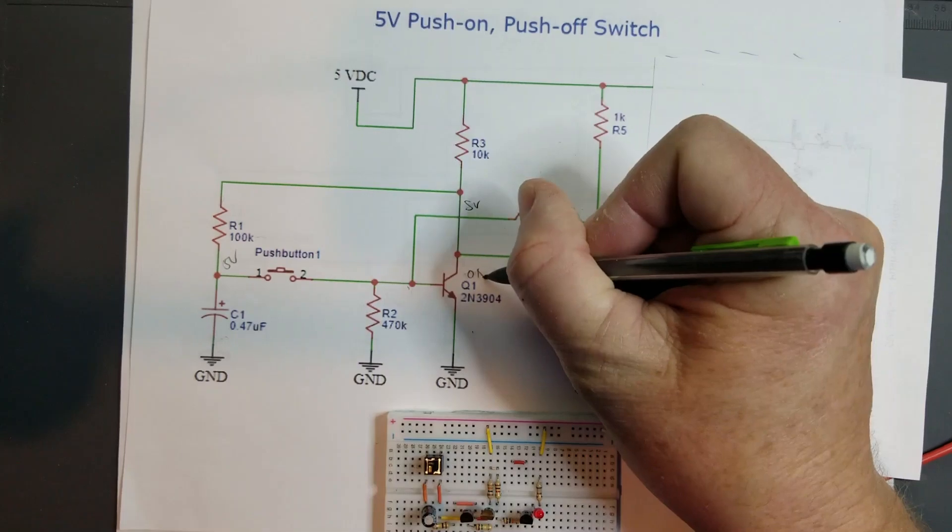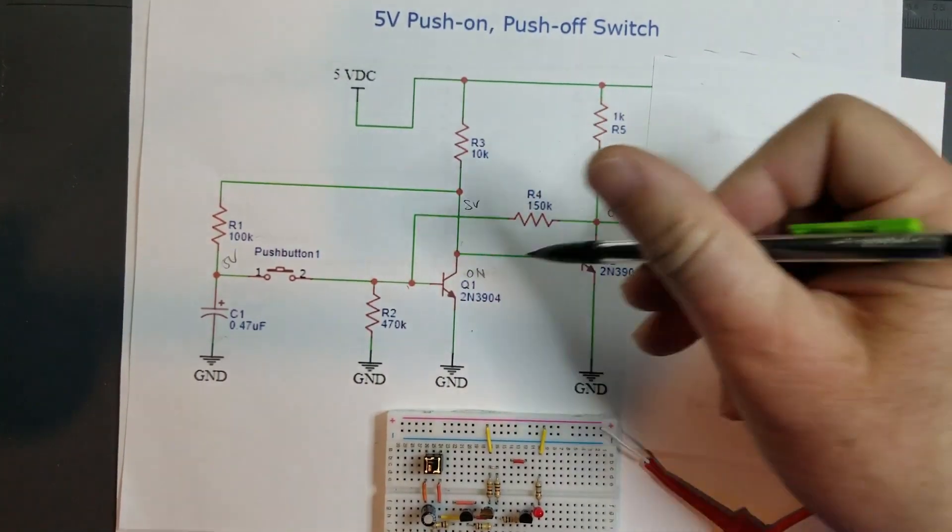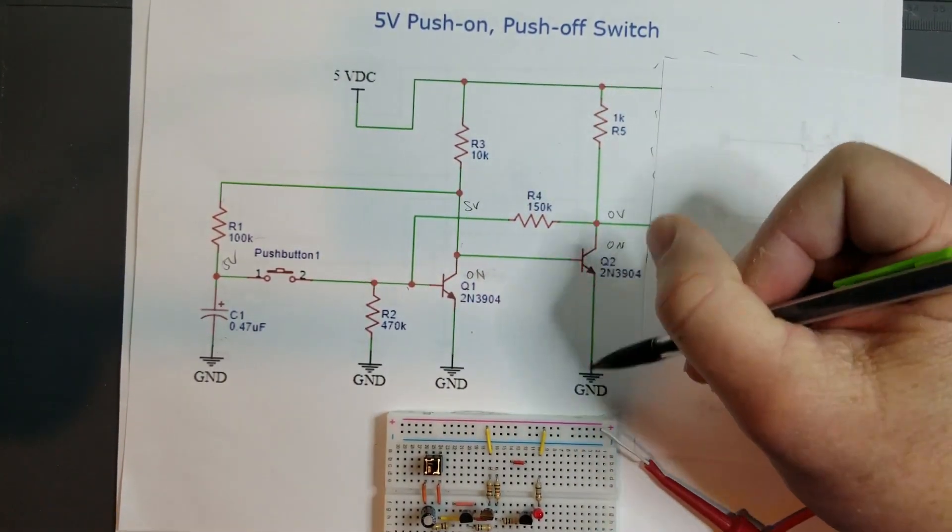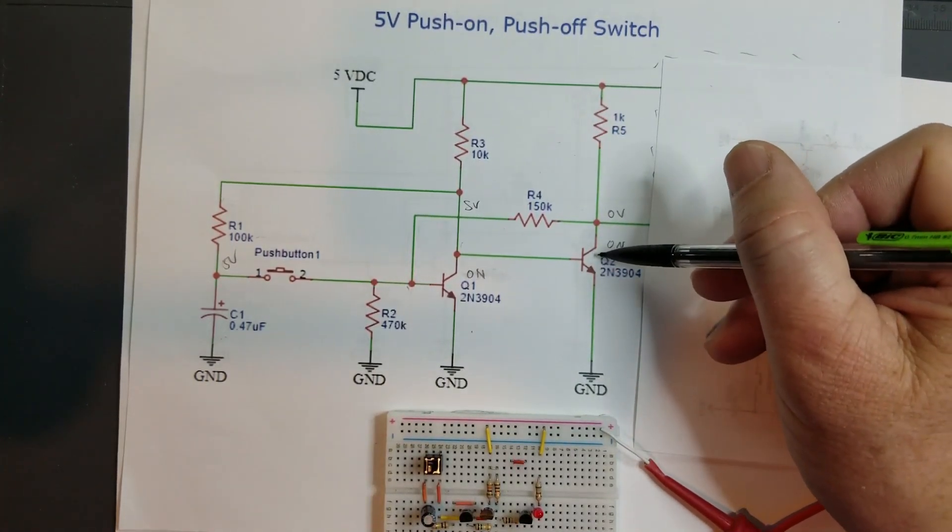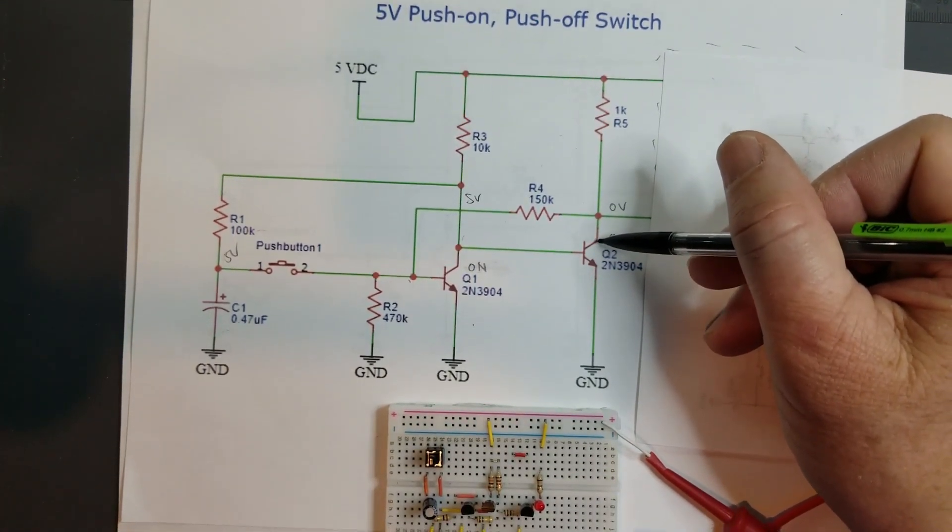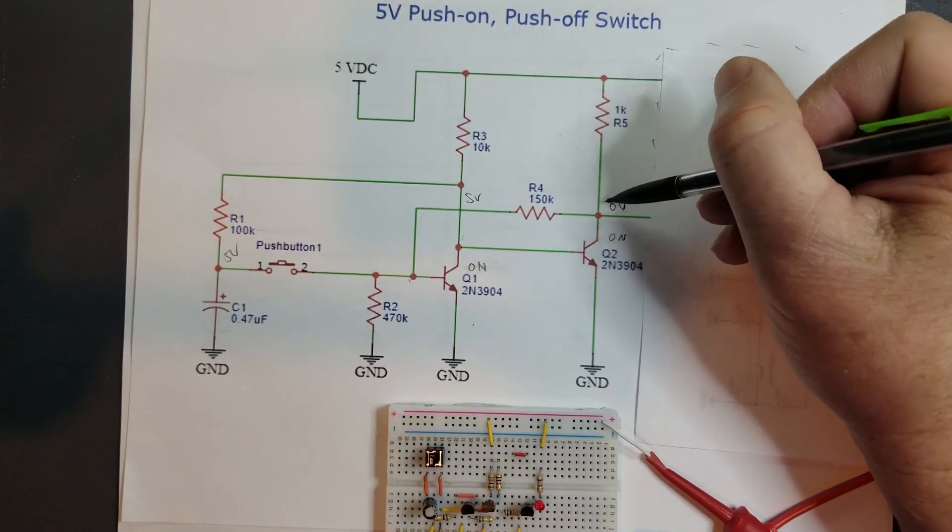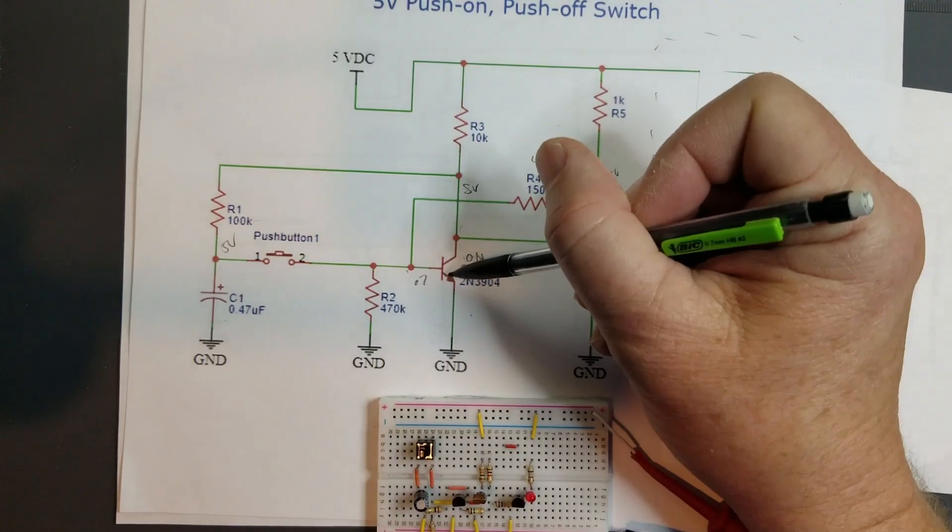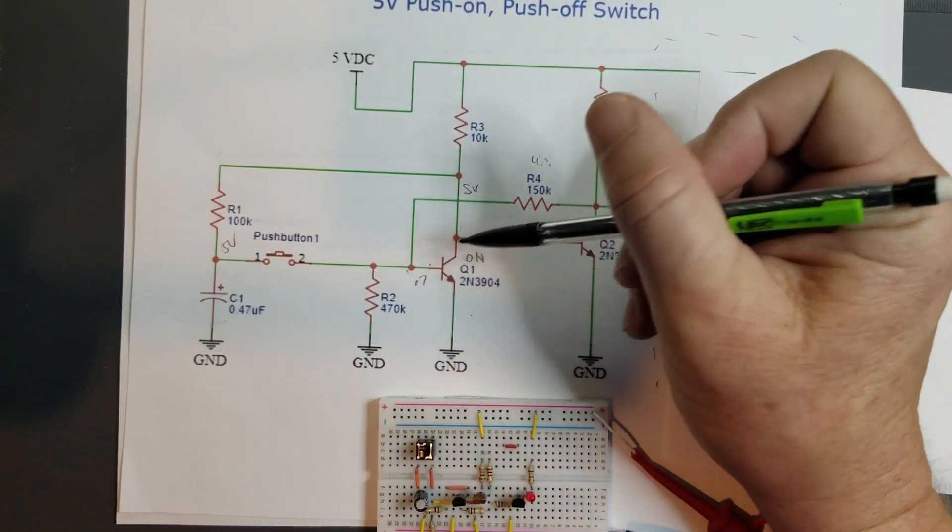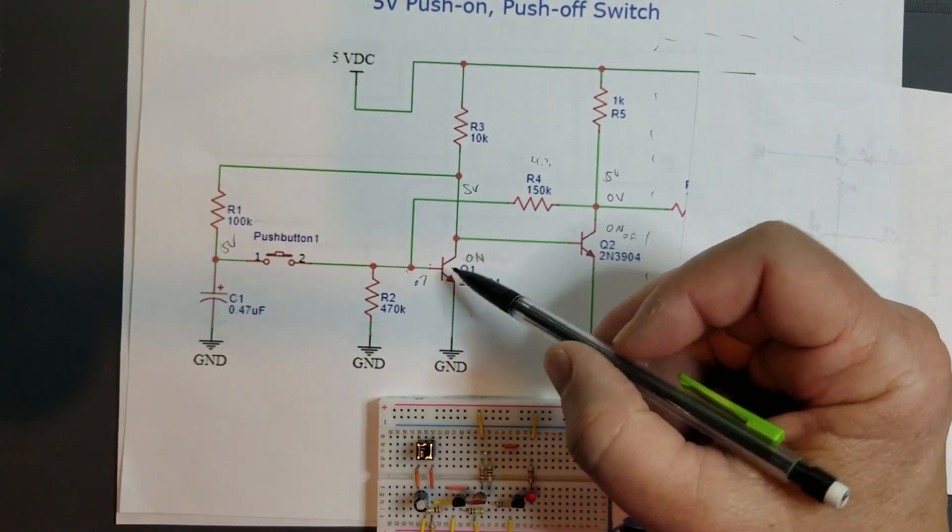Now that transistor is for an instant going to be on. This goes low and what that does, that pulls this transistor, the base of this transistor low, and turns this transistor off. This transistor is off.